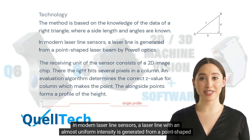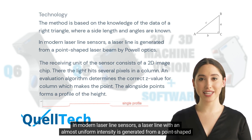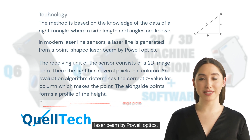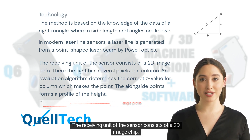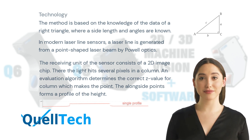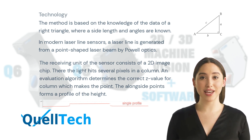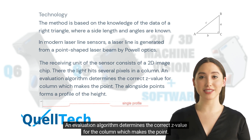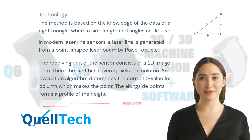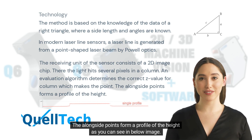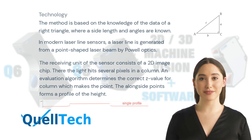In modern laser line sensors, a laser line with an almost uniform intensity is generated from a point-shaped laser beam by Powell Optics. The receiving unit of the sensor consists of a 2D image chip, where the light hits several pixels in a column. An evaluation algorithm determines the correct Z value for the column, which makes the point. The alongside points form a profile of the height, as you can see in the image below.